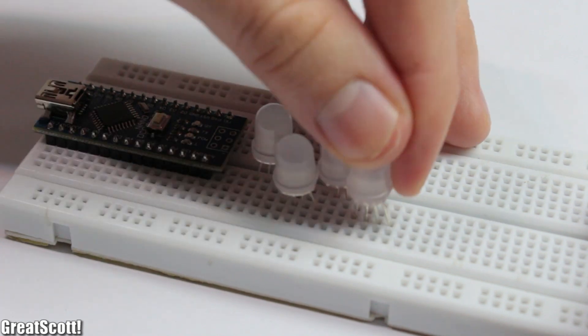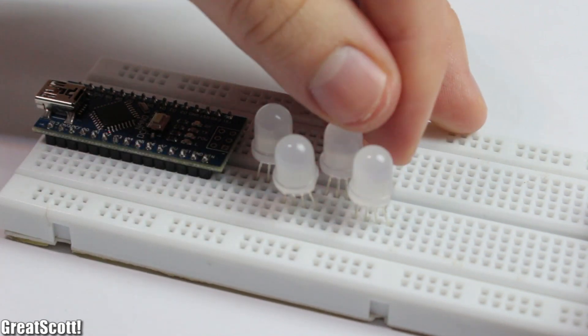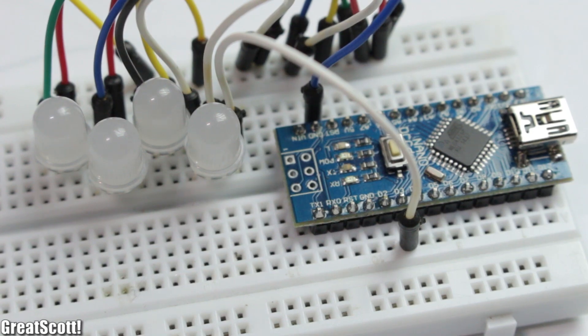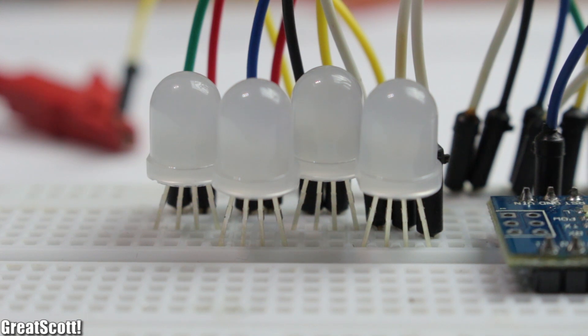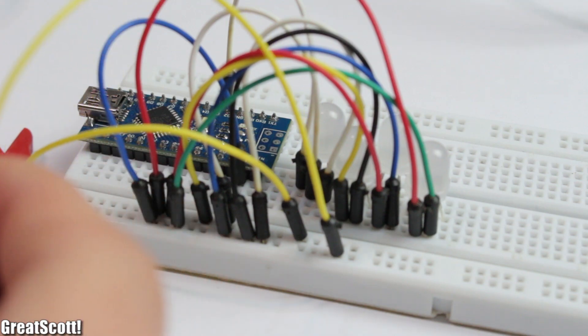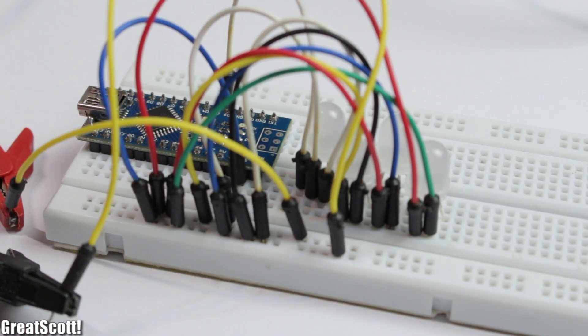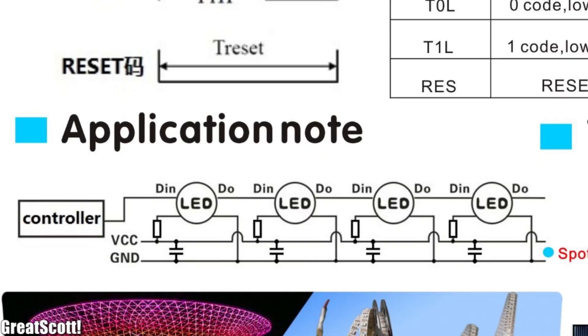I daisy chained a couple of those together on my breadboard with the first data in connected to my Arduino Nano. And the data outs feed the next data in. It's pretty easy. But do I need external parts? Well, the data sheet apparently recommends a not labeled resistor and capacitor. Who doesn't love those?